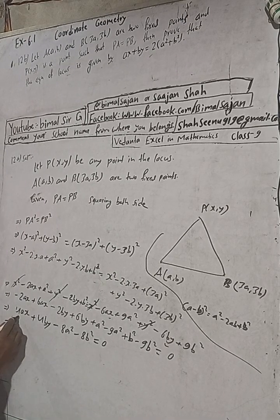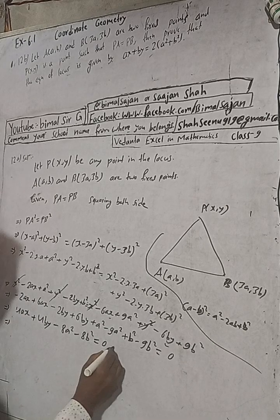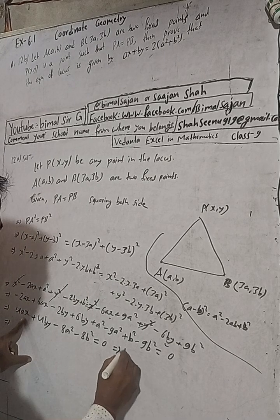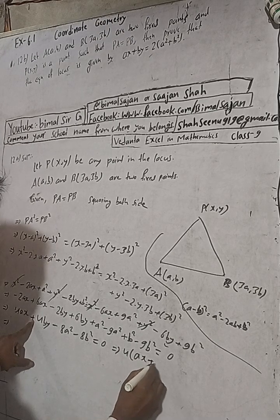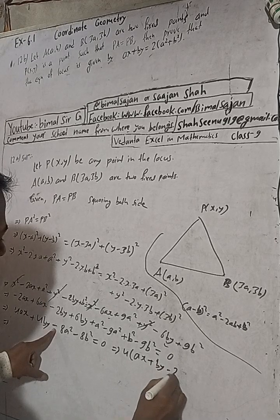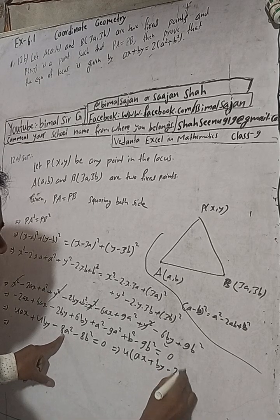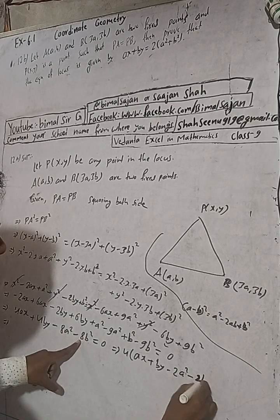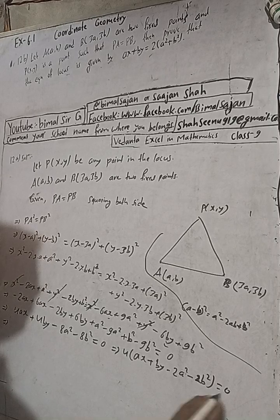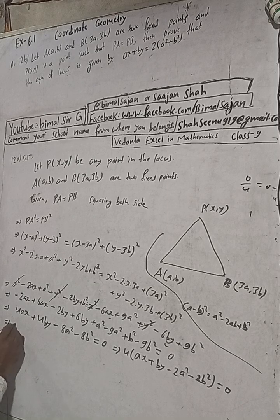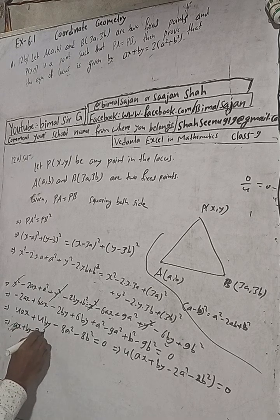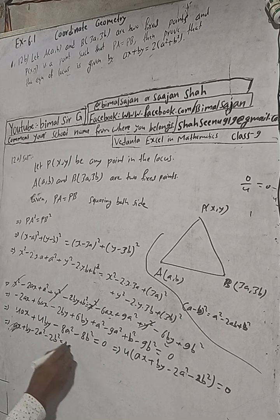We can take 4 as common factor. Taking 4 common gives: 4(ax + by − 2a² − 2b²) = 0. Dividing both sides by 4, since 0 divided by 4 is 0, we get: ax + by − 2a² − 2b² = 0.